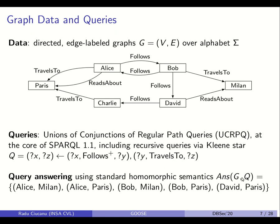Query answering uses the standard homomorphic semantics as in SPARQL, and we denote by ANS(G,Q) the answers of query Q on graph G. For example, we return the pair Alice-Milan because from Alice we can travel with edge follows to Bob, and from Bob we can travel to Milan with label travels to. Moreover, the pair Alice-Paris is returned because from Alice we go follows Bob, follows David, follows Charlie, and then from Charlie travels to Paris.